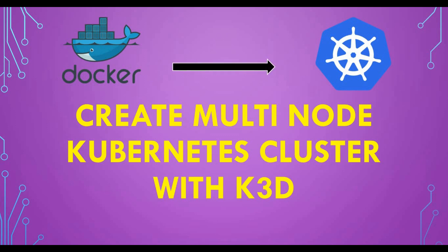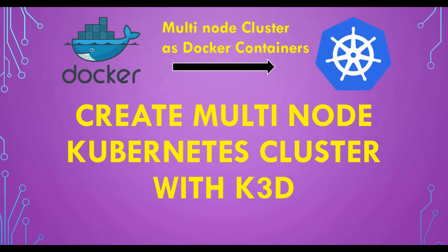Usually to create a Kubernetes cluster, you have to go through the whole process of creating master and worker nodes, or use Minikube. In this tutorial, what we are going to do is create a multi-node cluster as Docker containers — the master and worker nodes will run as Docker containers — and we'll use k3d to quickly spin up that cluster.